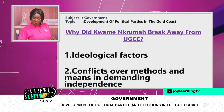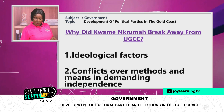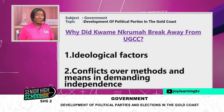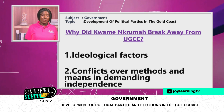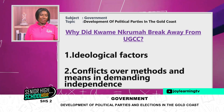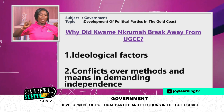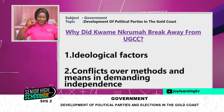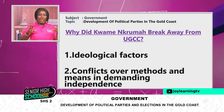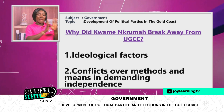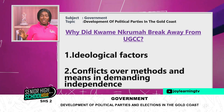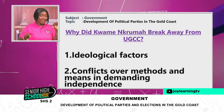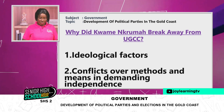So let's see why Kwame Nkrumah broke away from the UGCC. After all, they brought him into the system. One reason was ideological factors — his form of thinking and the ideology he was expressing were different from the thinking of the UGCC members, especially the leadership. That caused a lot of problems and conflicts within the party.